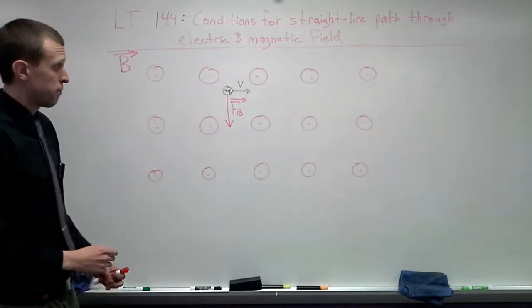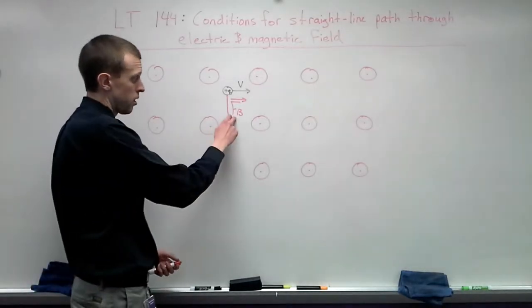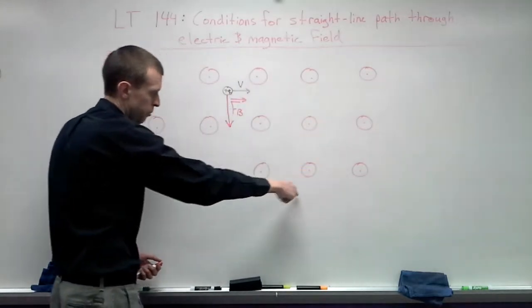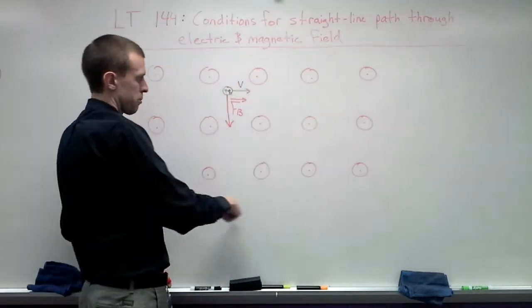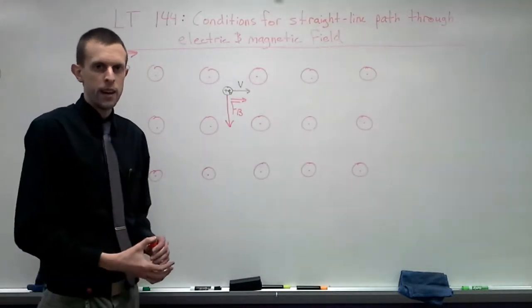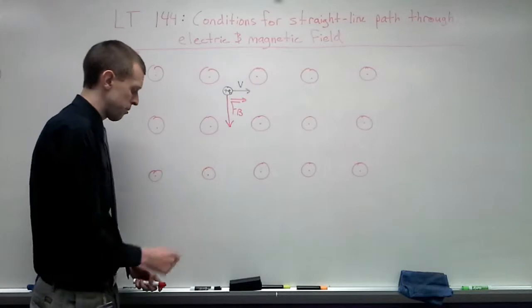So without any electric field, we would have our force causing this thing to rotate down this way. And as we saw before, it ends up going around in a circle here. So what kind of an electric field do we have to have in order to make this travel in a straight line?